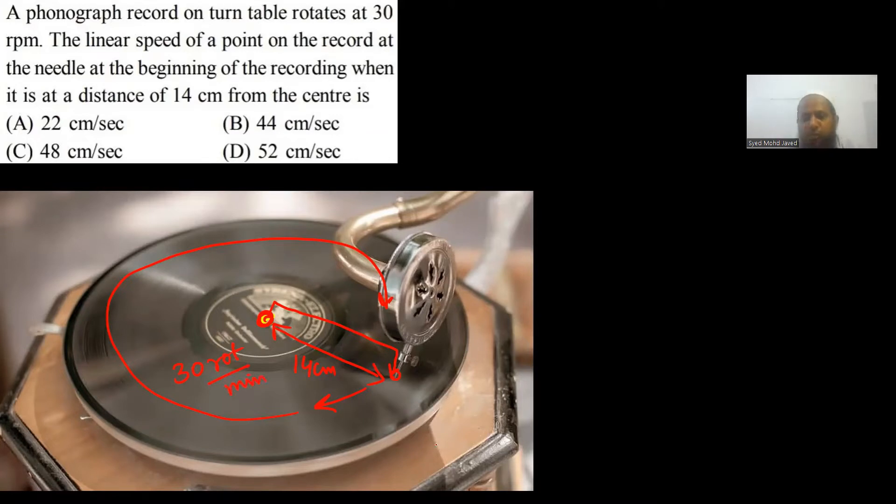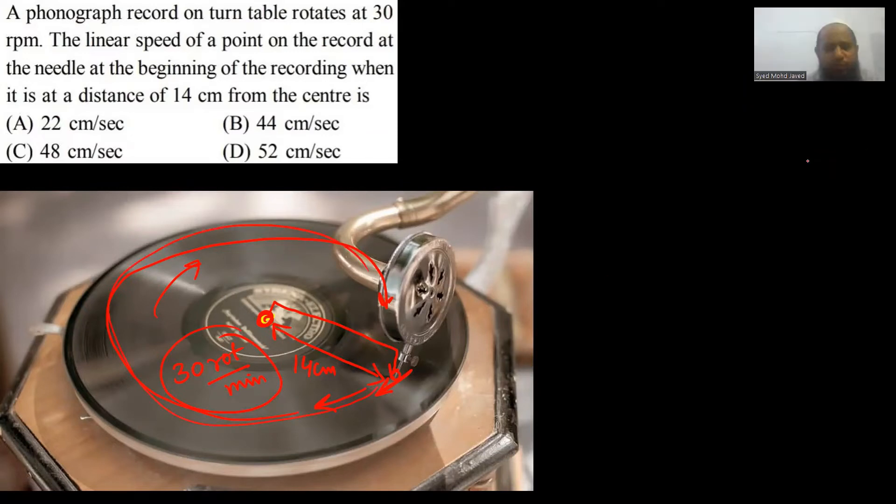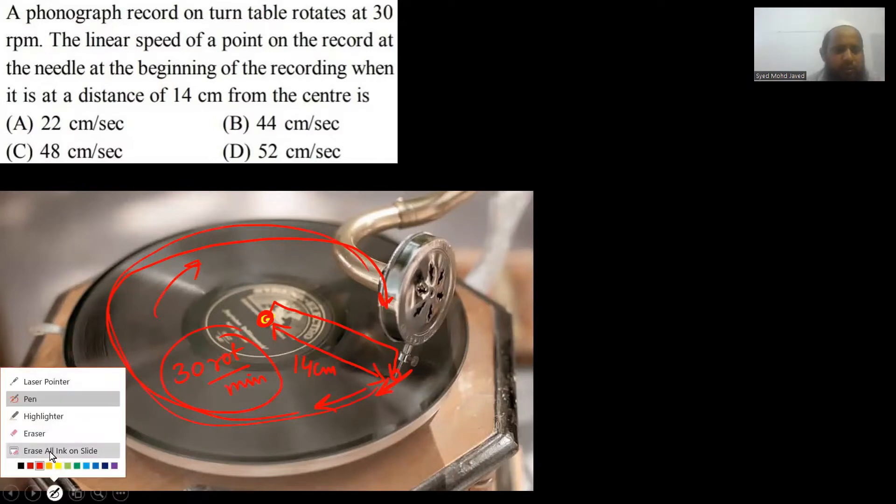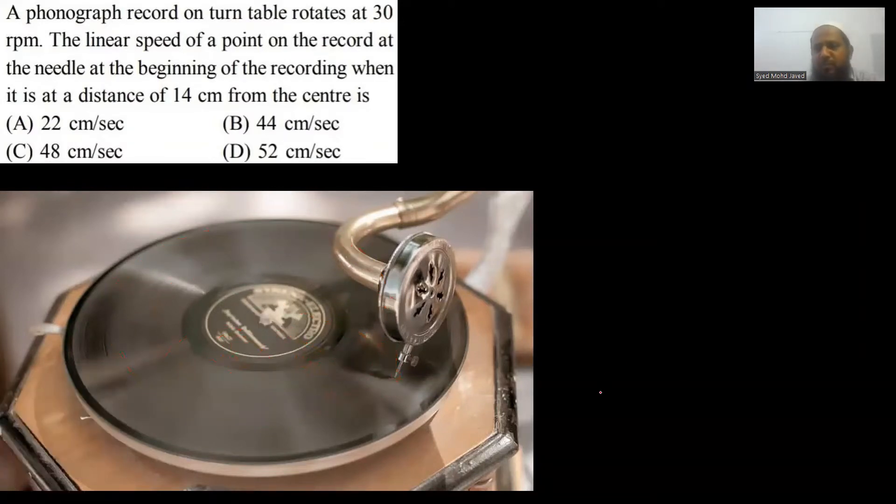It's 30 rotations per minute no matter what. I hope the question is clear to all of you. We have rotation per minute and we need meter per second or centimeter per second velocity. Tell me how much rotation is. It's 30 rotation per minute.